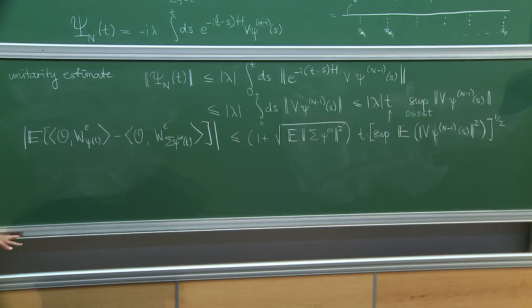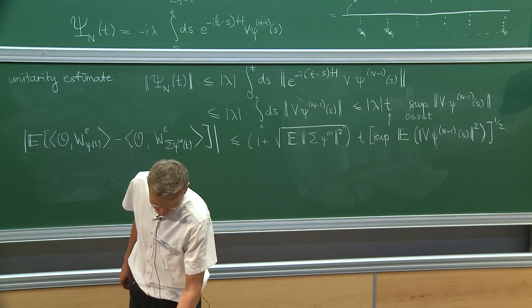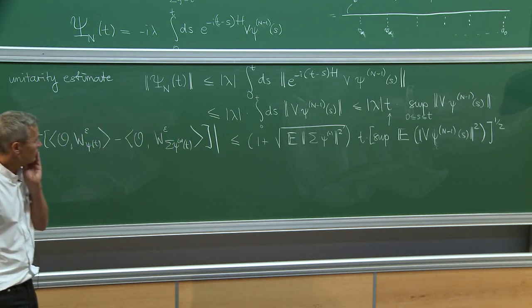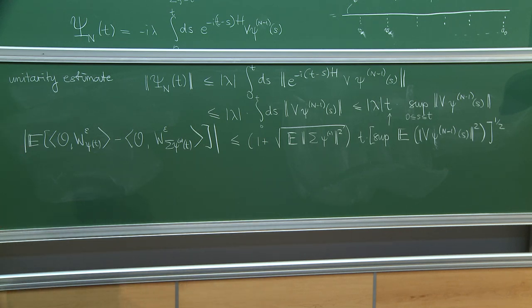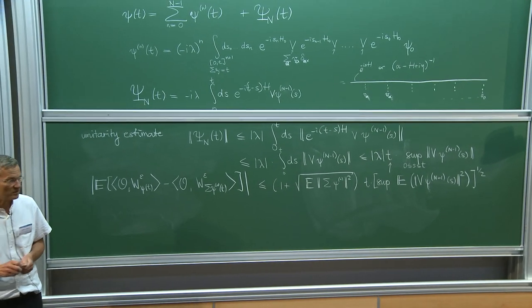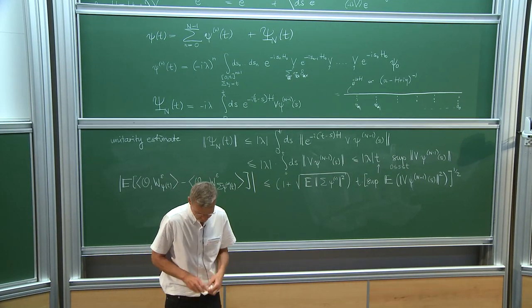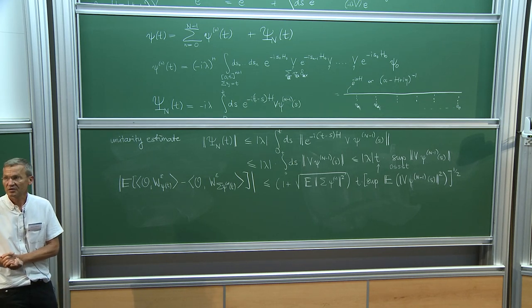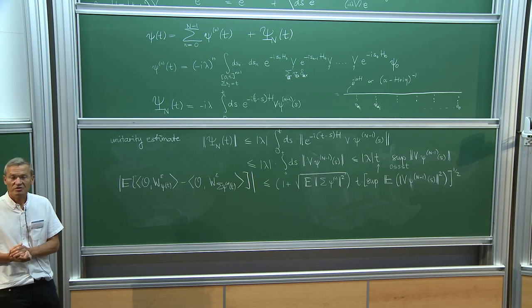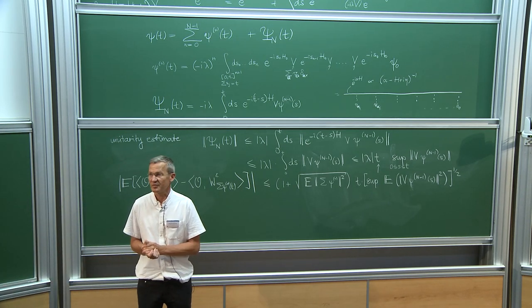This unitarity estimate is important. Much of this carries over to the many-body case, but when you do this unitarity estimate in the many-body case, you lose connectedness of your diagrams — and that is a disaster. So this estimate does not obviously carry over to the more general setting.